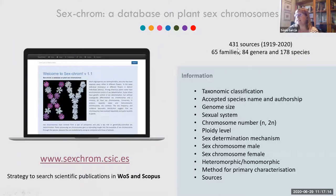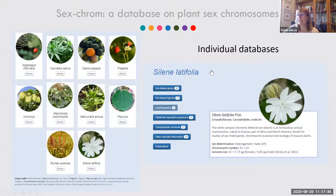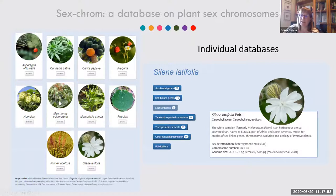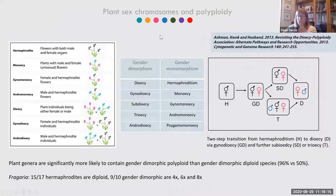The SexChrome database has information from 431 sources covering 65 families, 84 genera, and 178 species. It includes all kinds of available information, presented in a way that is accessible even to non-expert users. The database also features individual sub-databases for model organisms in plant sex chromosome research, with information on sex linkage, sex-biased genes, sex-specific loci, tandem repeat sequences, and transposable elements.